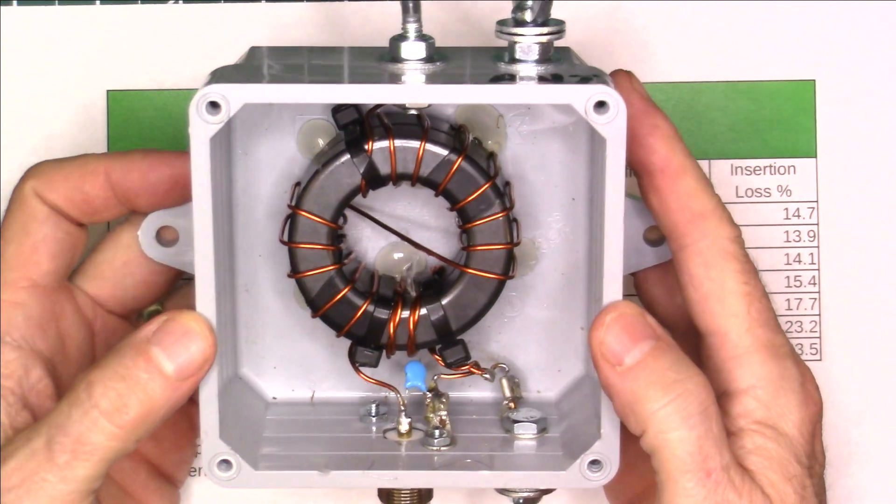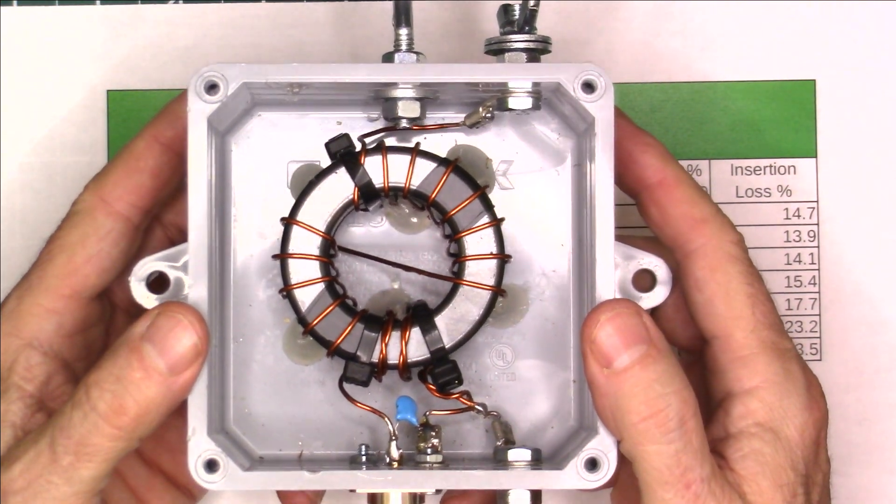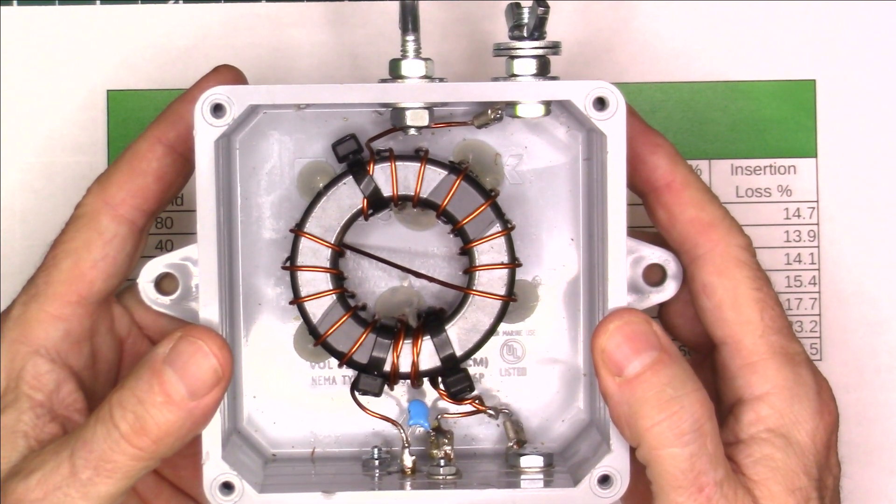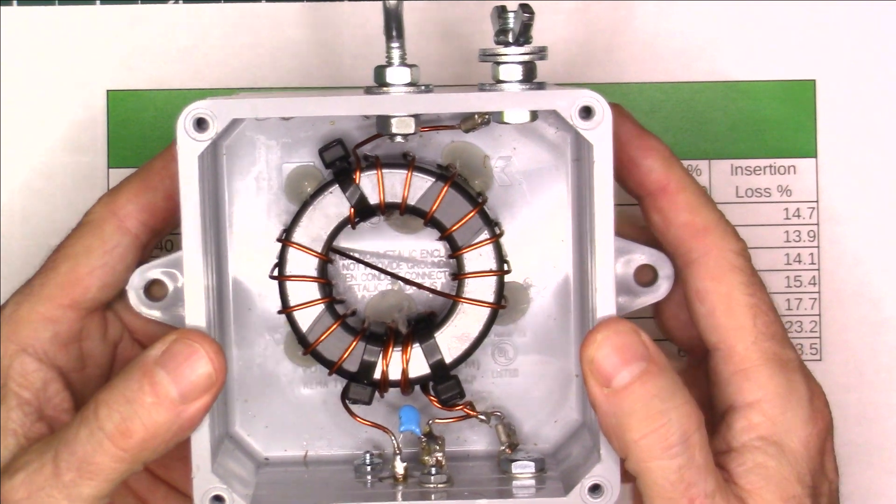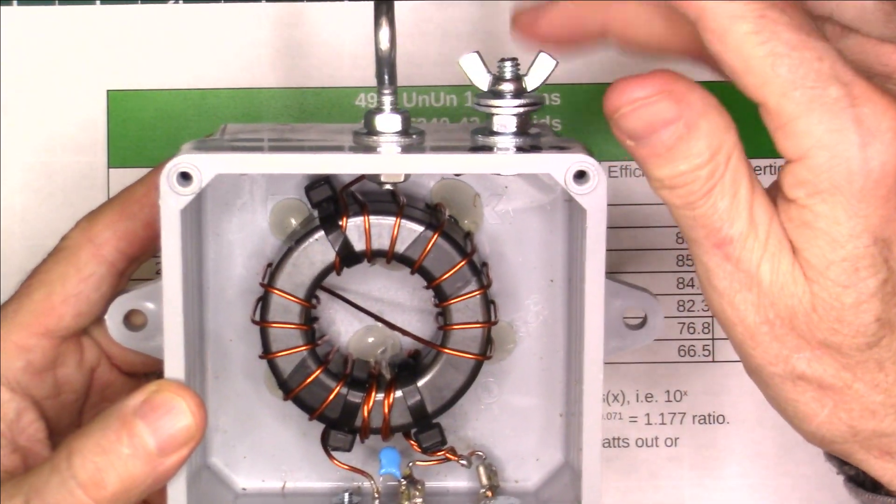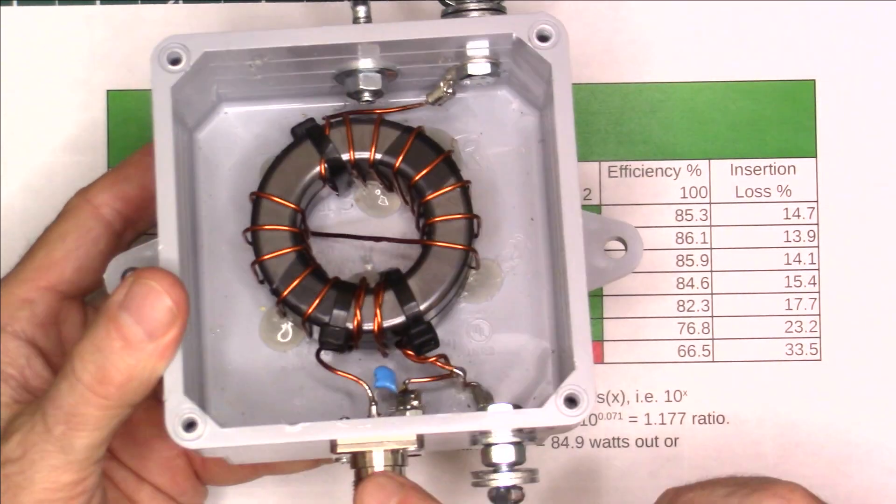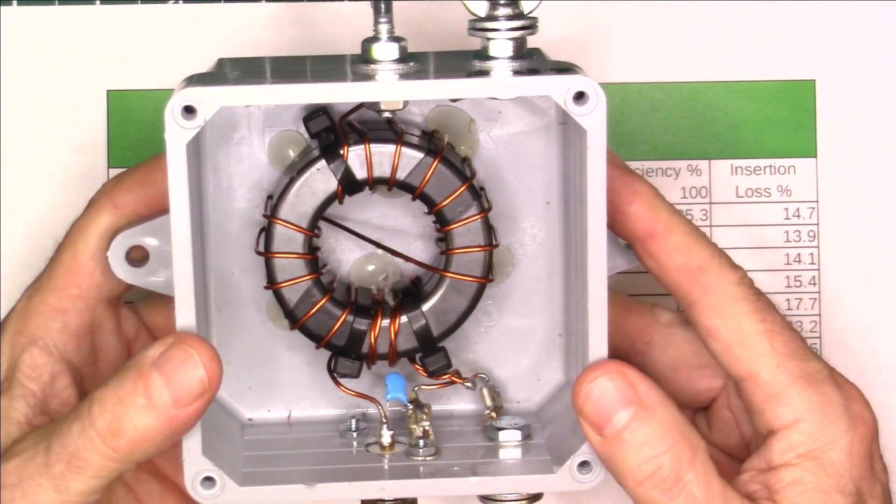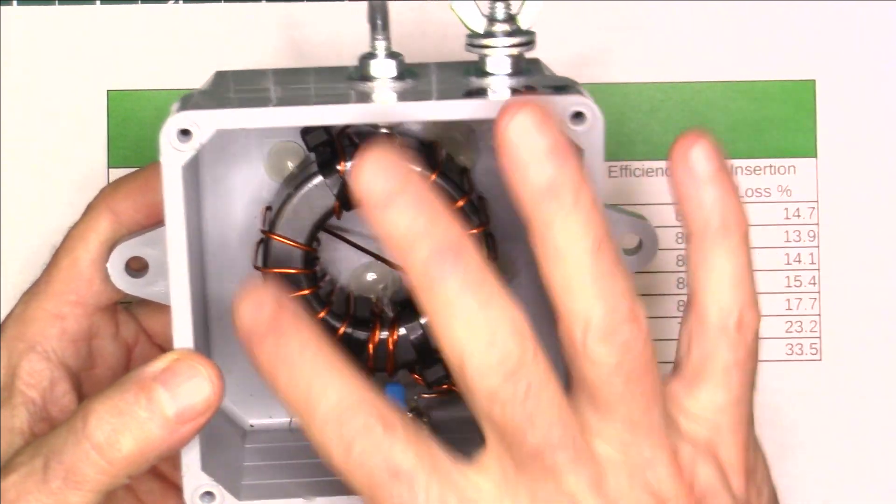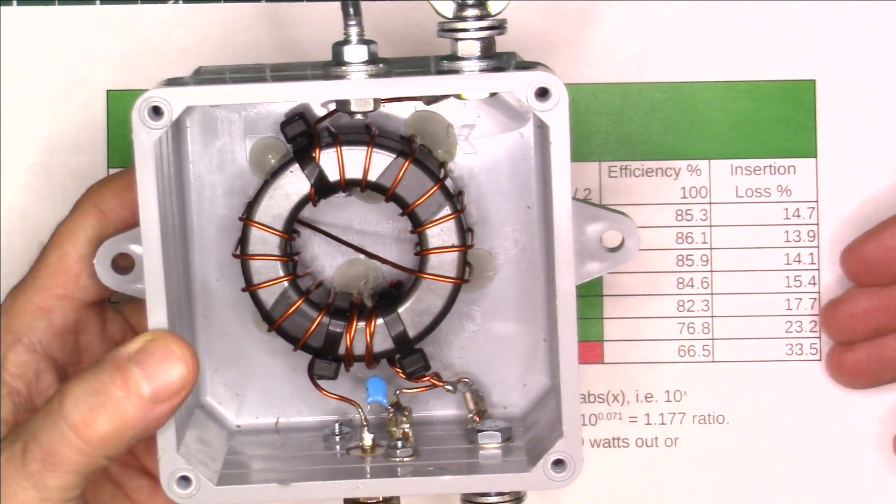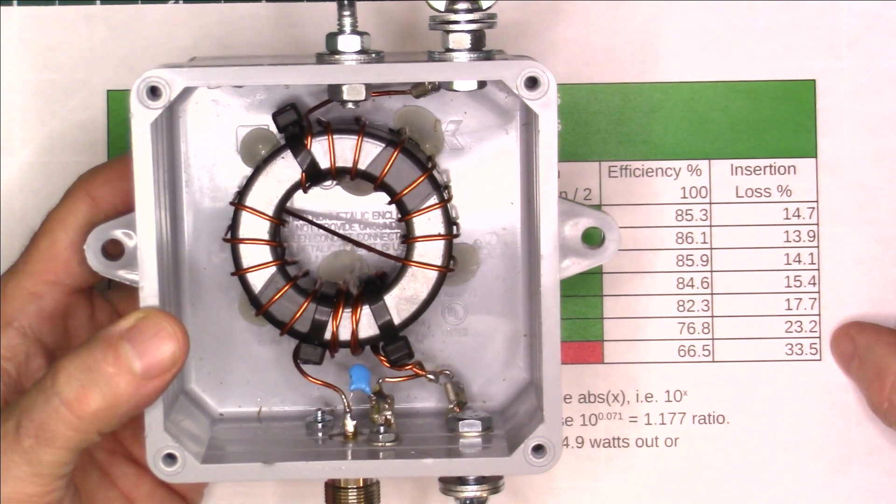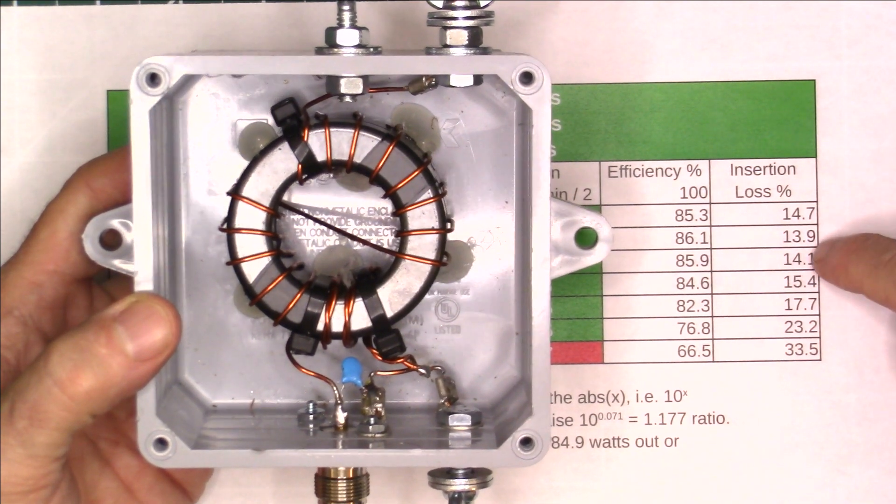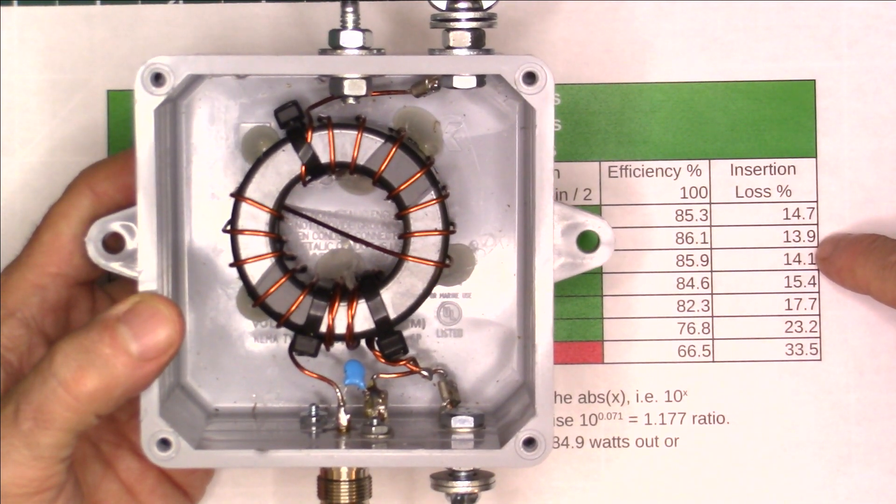Now, even though this works as designed, it does provide the matching that it's supposed to provide with a 49 to 1, where it's 2,450 ohms at the antenna and 50 ohms going into the radio. That part works. But the thing is, in doing so, in this particular configuration, there's loss up to one-third. Up to one-third of the power going through it is lost, and a minimum of 14% is lost.